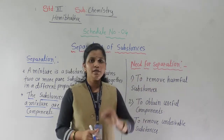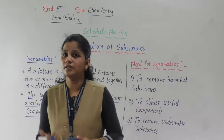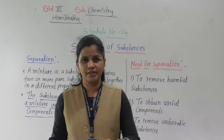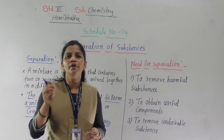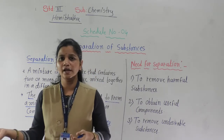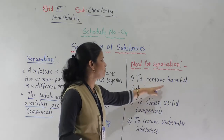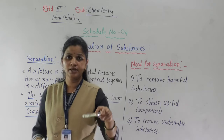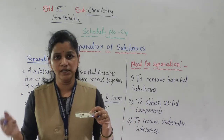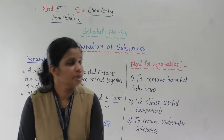Now we will see the need for the separation — why we have to separate things. The first one is to remove harmful substances. Whenever we purchase some things, there may be pulses and other things in which some unwanted substances are present, and those substances are very harmful for us. If we do not separate them, they may cause diseases. So the first purpose of separation is to remove harmful substances. For example, in rice there are many stones — if we do not separate them, we will suffer from many diseases.